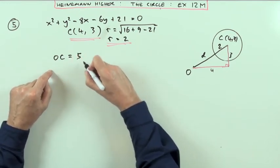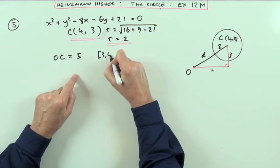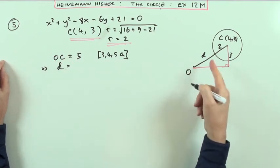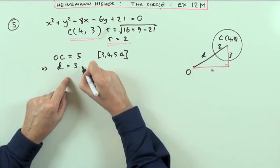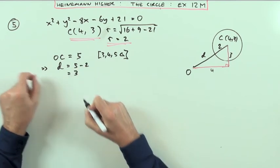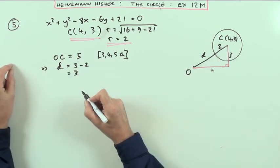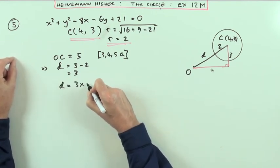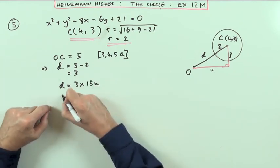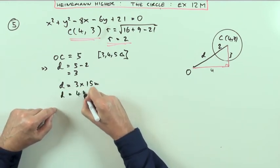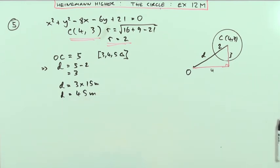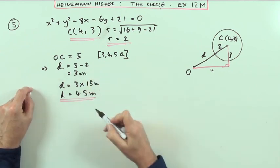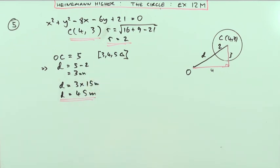OC is 5. That's because I had a 3-4-5 triangle, which means that the distance I'm looking for in the diagram is 5 take away 2, which is 3. That distance is 3, which means in terms of the actual dimensions, d would equal 3 times, and it said it was 15 meters per unit, so the actual distance is going to be 45 meters. And that's really all there is to it.